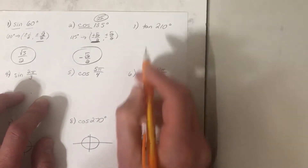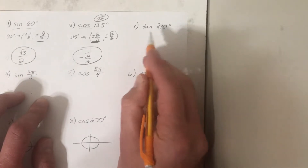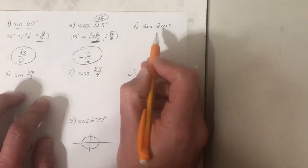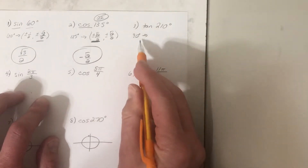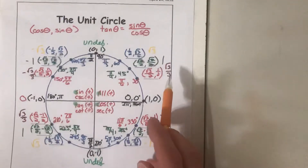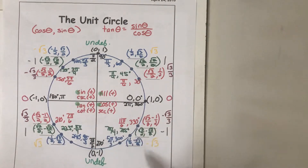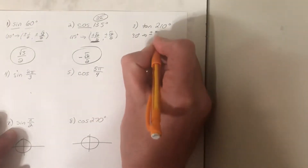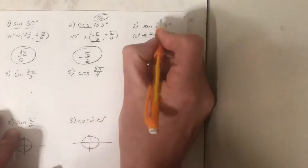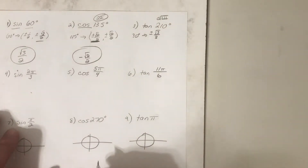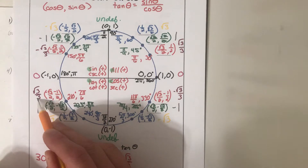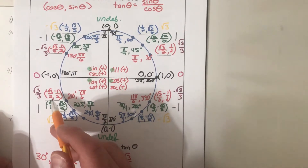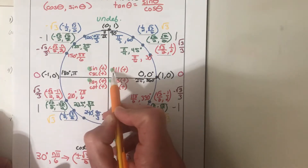For tangent of 210 degrees, 210 degrees has a 30-degree reference angle and is located in quadrant three. For a 30-degree reference angle, the value of tangent is either plus or minus root three over three. Since 210 is in quadrant three, tangent is positive there — because a negative value divided by a negative value is positive — so our answer is positive root three over three.